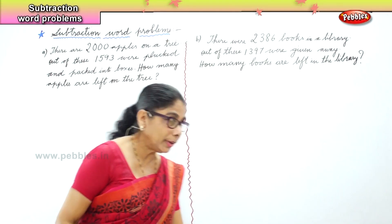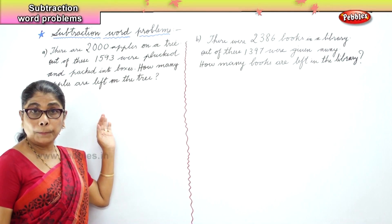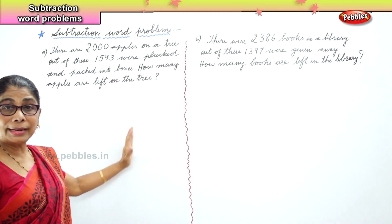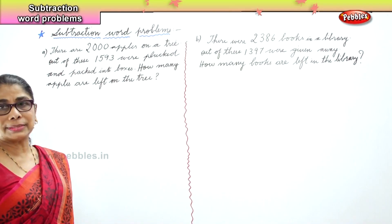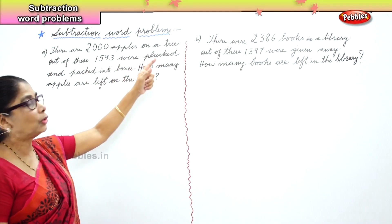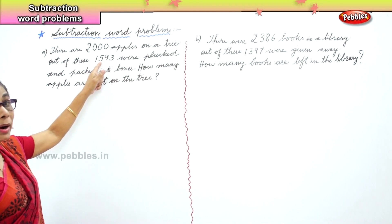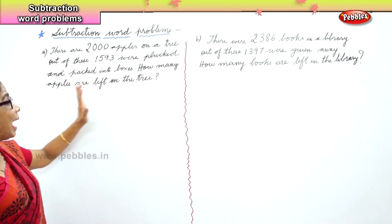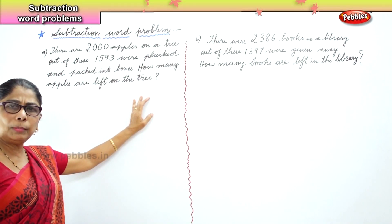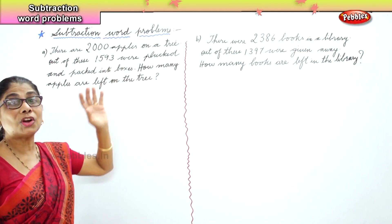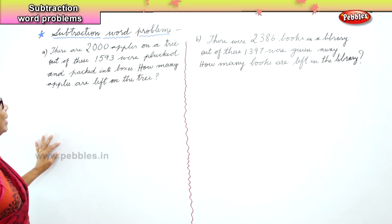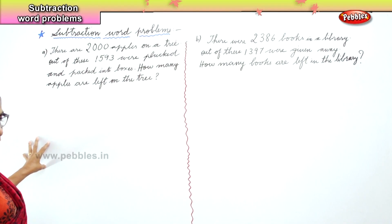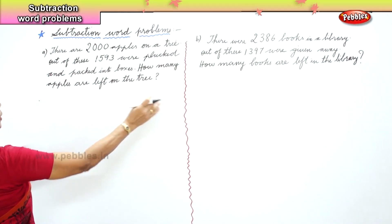Now what we need to do is: first read the question, form the statement, then write down a column where you write thousands, hundreds, tens, ones. Then we do the sum. First let's read problem A: there were 2,000 apples on a tree. Out of these, 593 were plucked and packed into boxes. The question is how many apples are left on the tree?